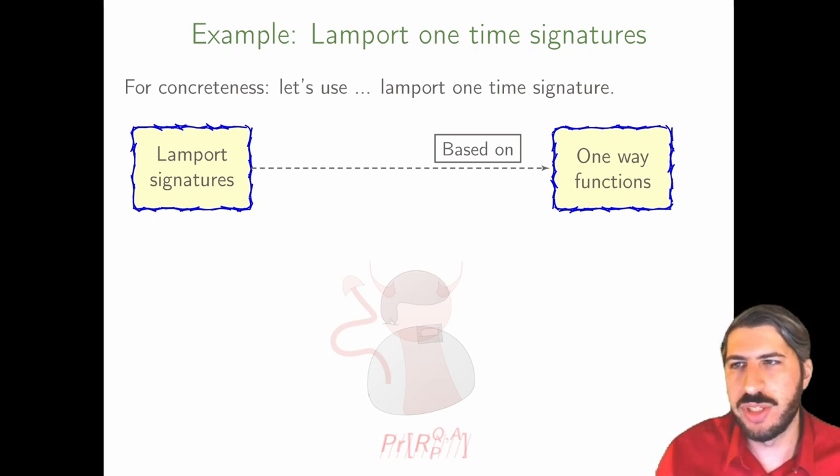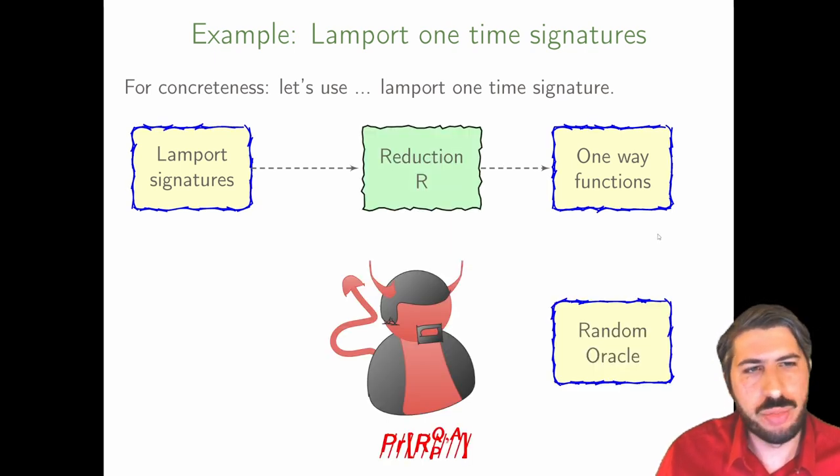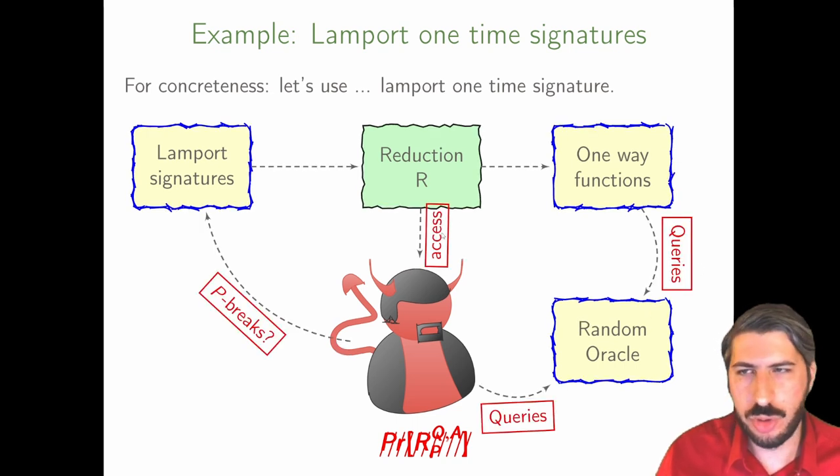So the next idea that comes to mind is, okay, we have proven there's a reduction and things have worked in the standard model. How about we add a random oracle? Well, we need to prove our reduction still works with the presence of the random oracle and we don't have a case where our whole scheme is broken.